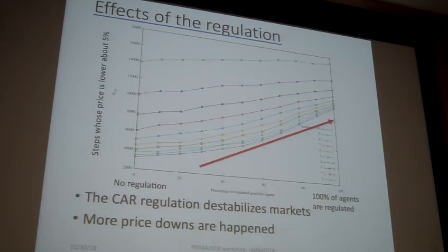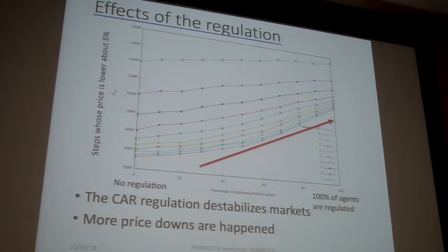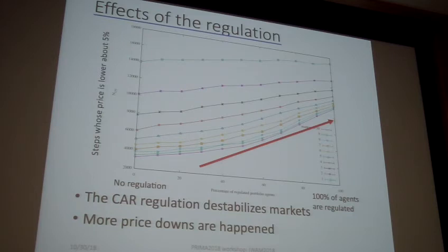Here is the result from scenario two. The horizontal axis is the percentage of agents regulated with CR regulation, and the vertical axis is the same as before. According to this figure, introduction of regulated portfolio agents destabilizes the market price and price shocks happen more frequently. This simply means the CR regulation destabilizes the market.